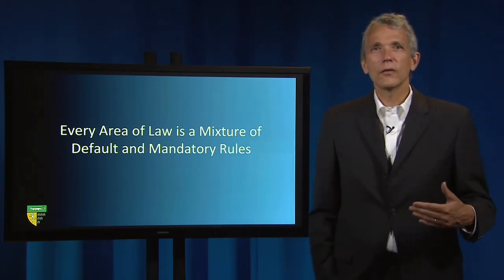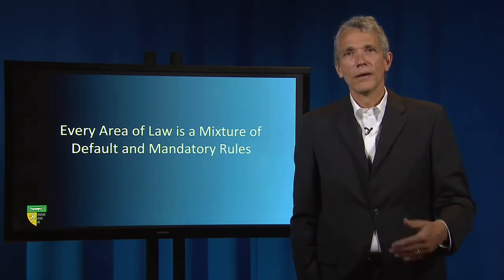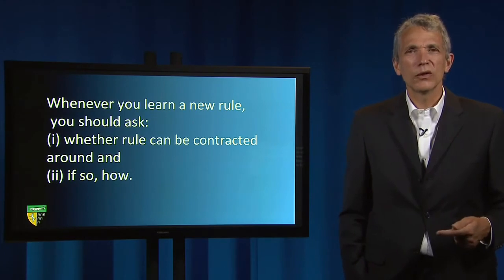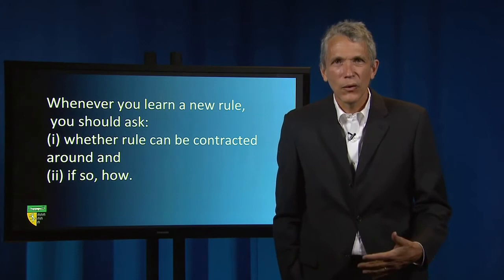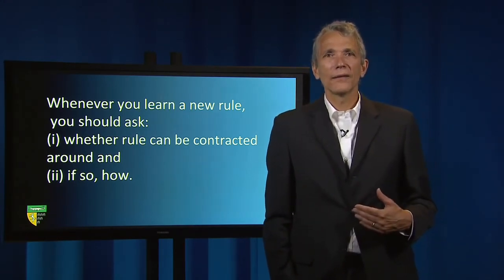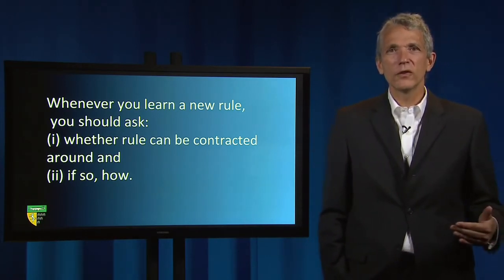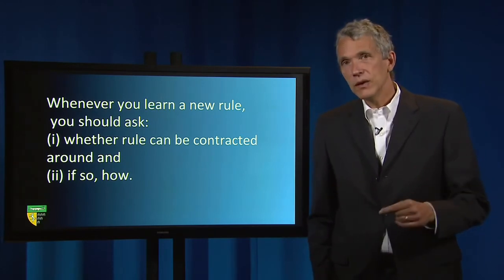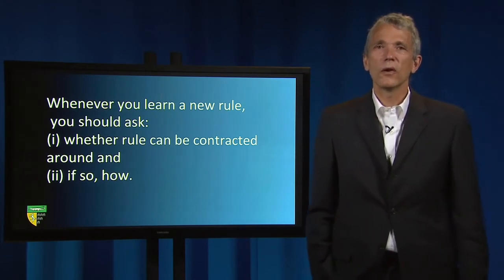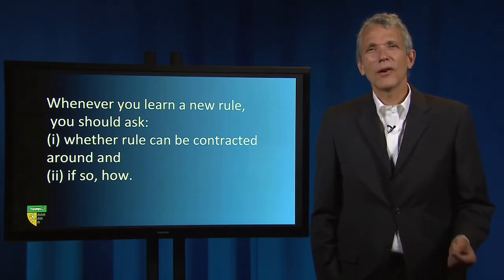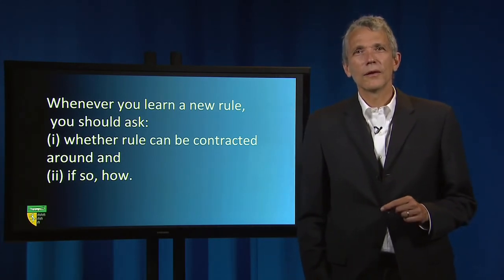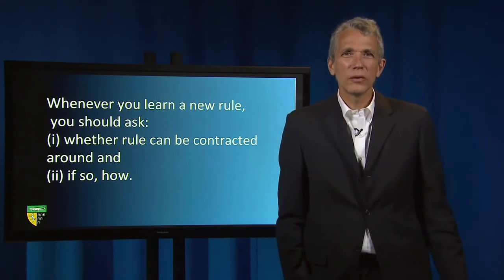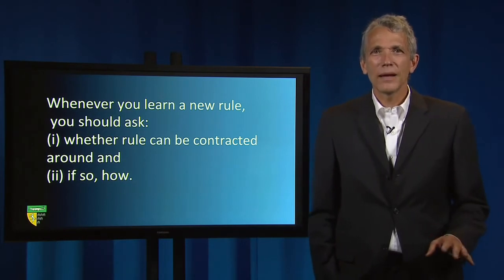The full faith and credit clause immediately goes on to suggest that its effects can be altered by Congress. For the rest of your legal education — indeed, for the rest of your life in the law — it's useful whenever you learn a new rule to identify whether the rule can be contracted around, and if so, how. A worthwhile exercise after reading each case is to consider what contractual provisions would be sufficient to reverse the court's decision. If there is no language that could reverse the decision — no altering rules for displacing the default result — then the court is applying a mandatory rule. It's also important to think about the policy considerations relevant to setting legal defaults and altering rules.